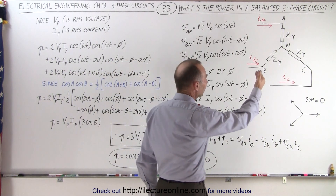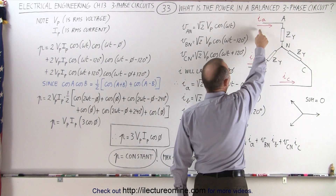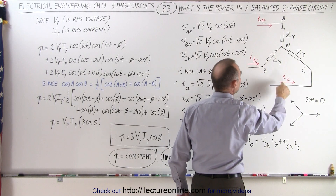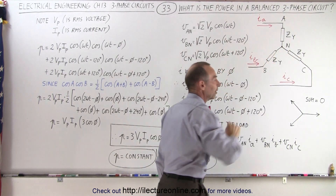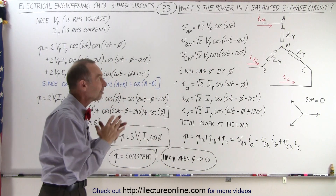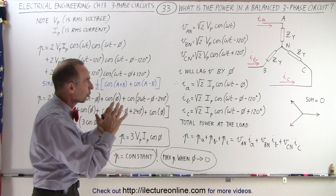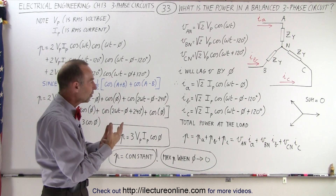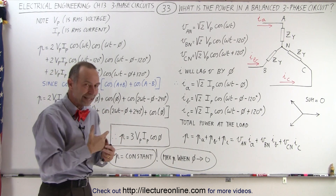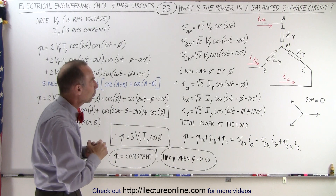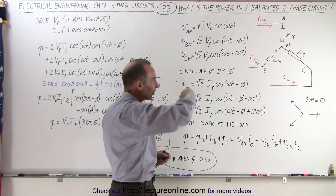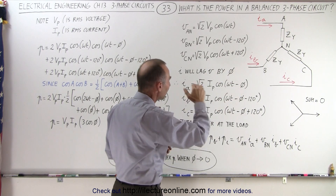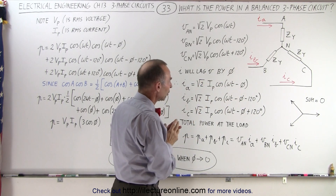Let's say we have a Y configuration load and we have three currents entering that load. We have the neutral in between, we have Ia, Ib, and Ic — the three line currents that are feeding the three balanced impedances in the load portion of the circuit. We're now going to consider the voltage and the current in the time domain, the time-varying voltage and the time-varying current in the three-phase circuit.